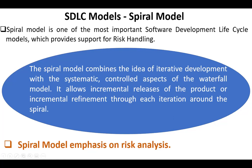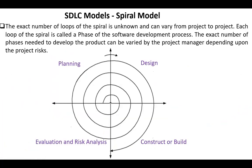The spiral model emphasizes risk analysis. The exact number of loops of the spiral is unknown and can vary from project to project. Each loop of the spiral is called a phase of the software development process. The exact number of phases needed to develop the product can be varied by the project manager depending upon the project risks.